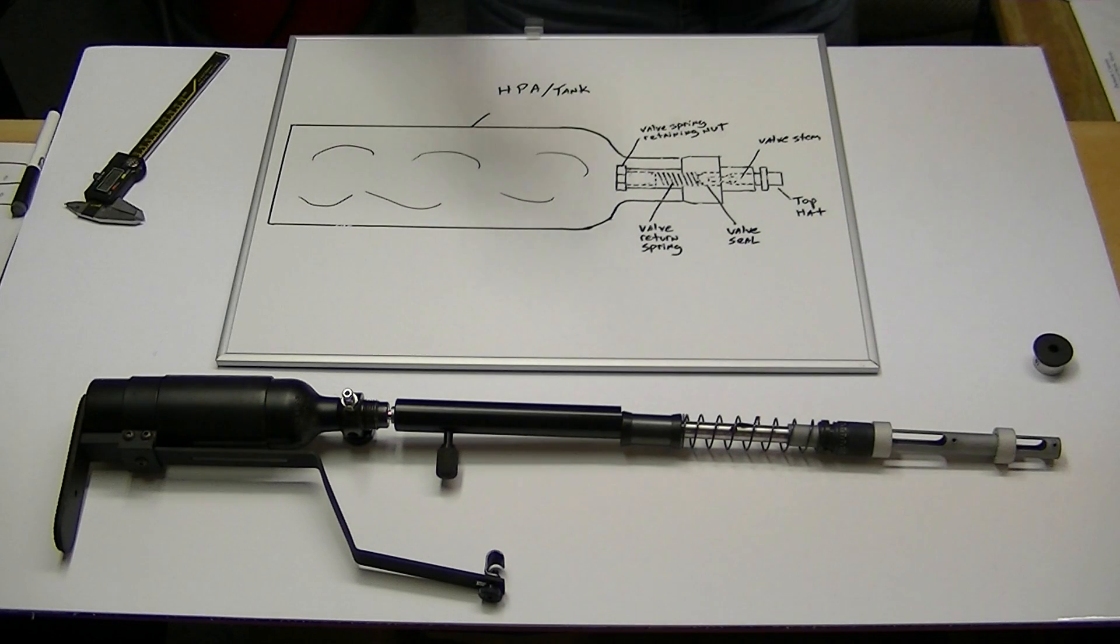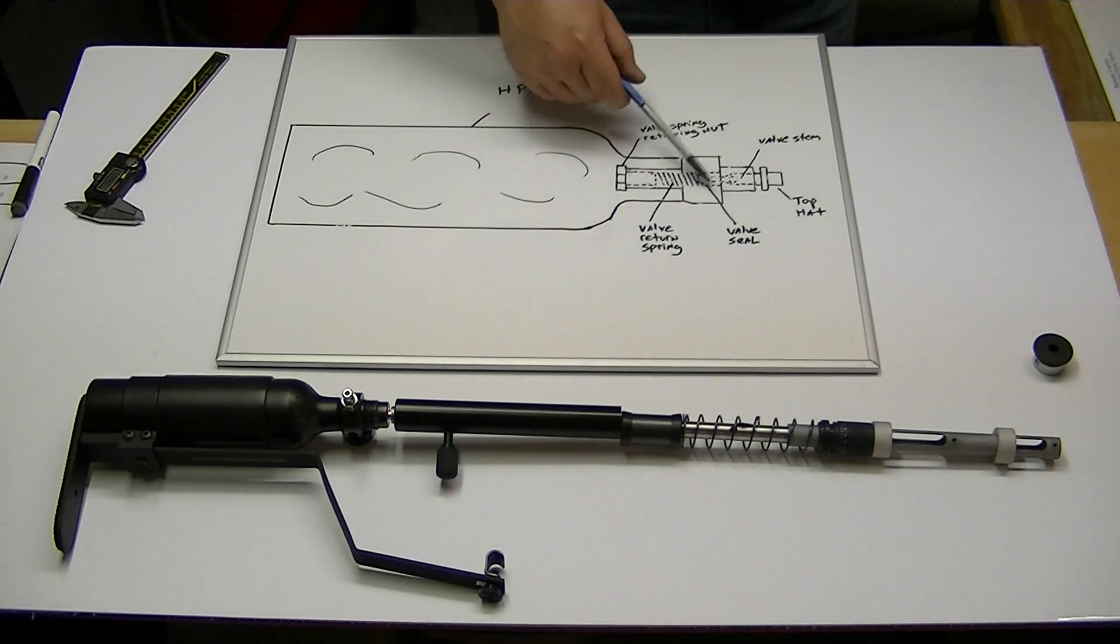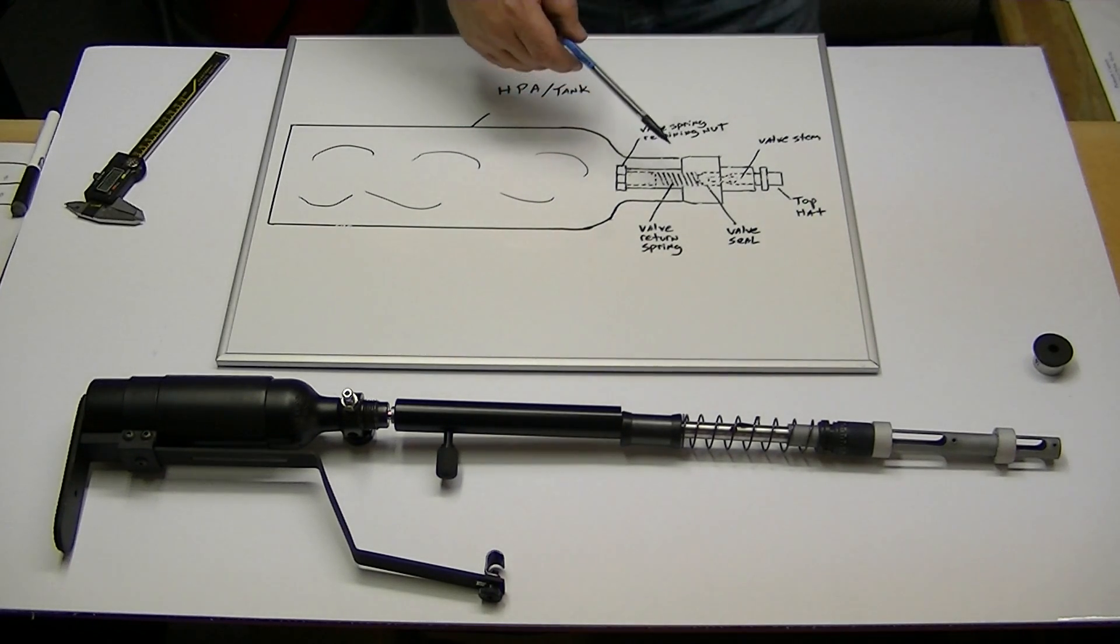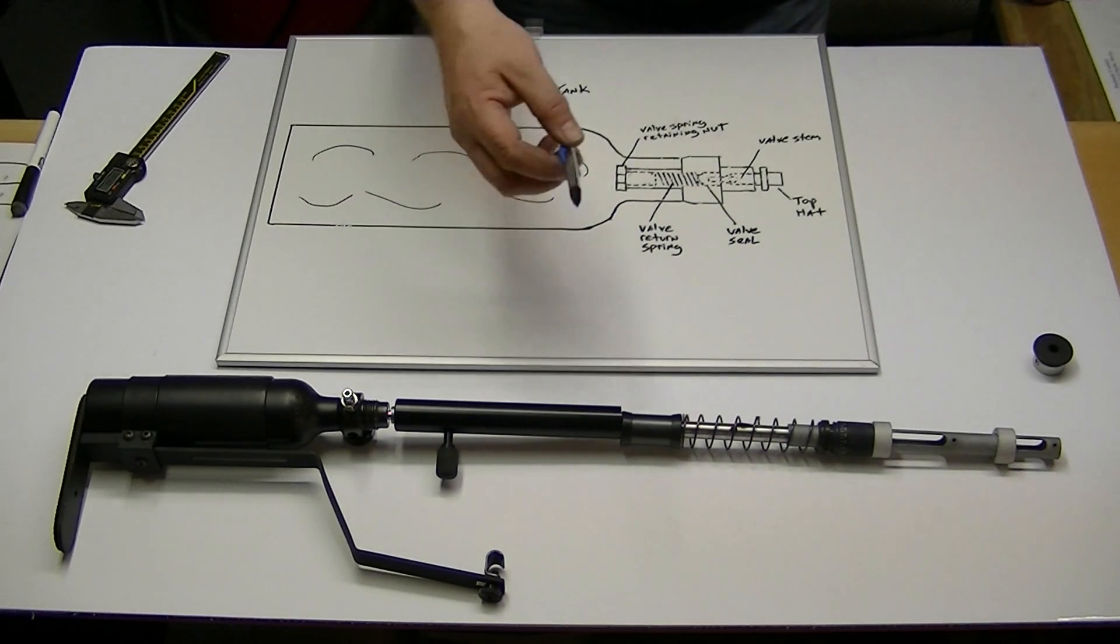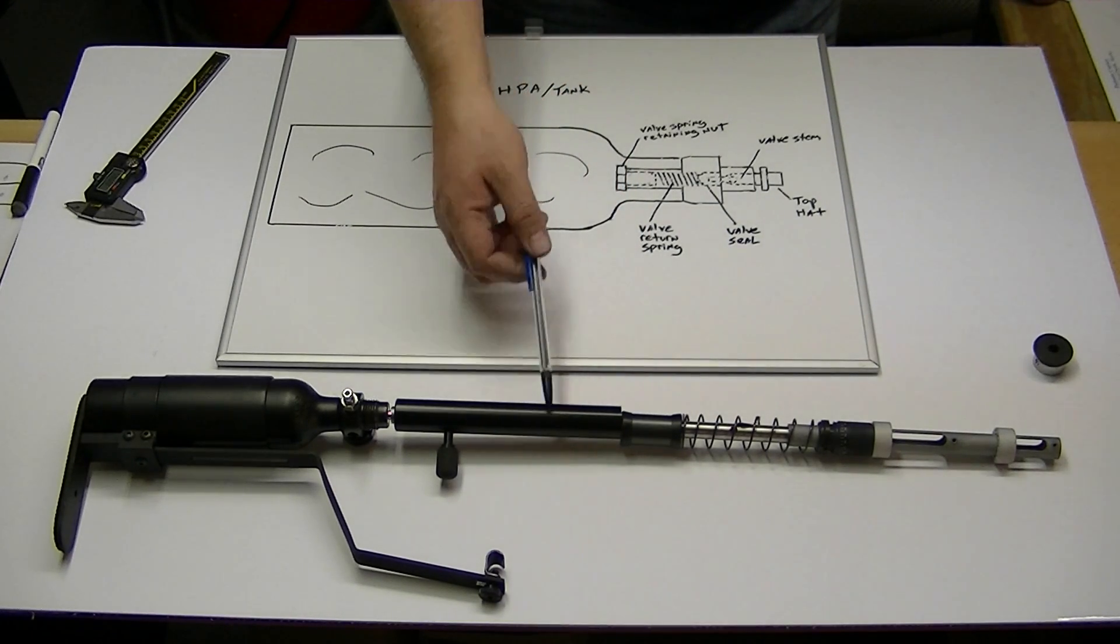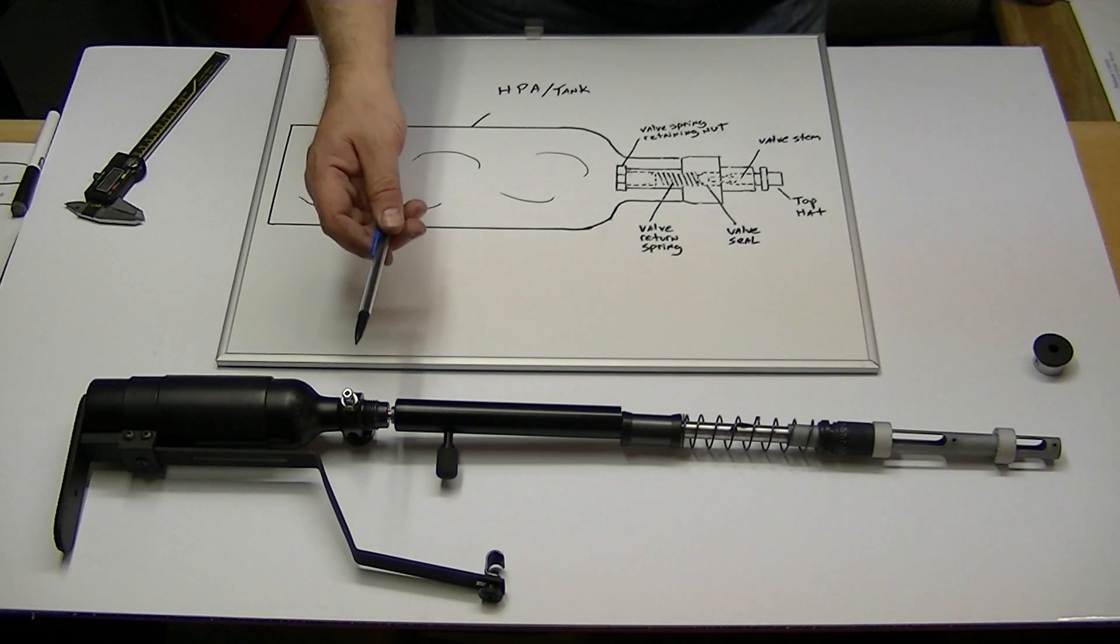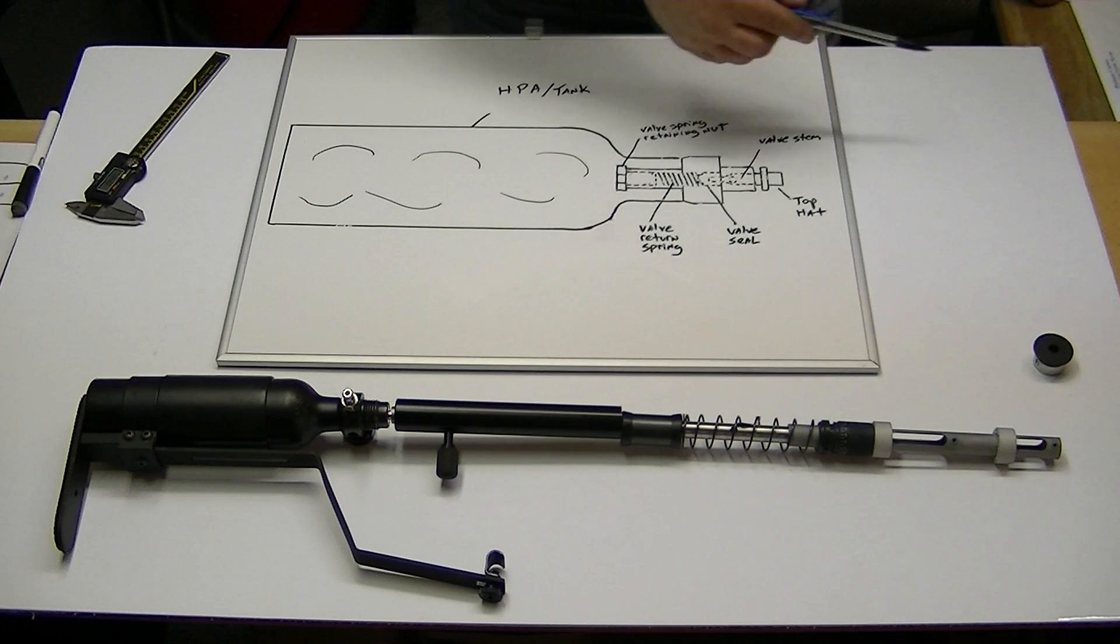First of all, the valve itself. This type of valve the Air Force uses is called a pop-it or a knock-open valve. That simply means that this valve is activated whenever the hammer strikes the bolt slide, which in turn strikes the top hat, the valve head, and releases a burst of air that launches your pellet.